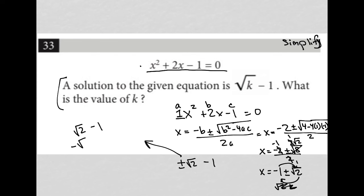Another of my answers would be negative root 2 minus 1. The answer being referred to in the question is this one, root 2 minus 1, and therefore that k value must be 2. My answer here is 2.